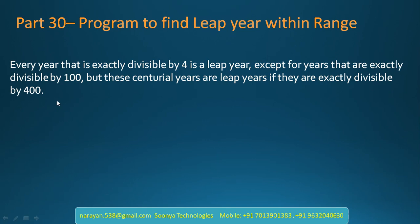For example, consider 1900. 1900 is divisible by 4 and also divisible by 100. If the year is divisible by 100, we need to check one more condition — that the year is divisible by 400. 1900 is not divisible by 400, so 1900 is not a leap year.